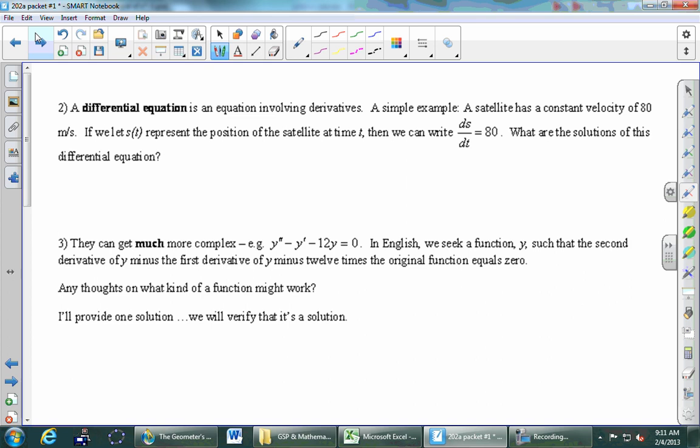So ds dt we know represents what physically? It's the velocity, right? It's the change in distance with respect to time, instantaneous change. So if the satellite has a constant velocity of 80, I want to know how can we solve this thing? So can you give me some formula so that the derivative of that formula is 80? I heard 80t. What's the derivative of 80t? 80.